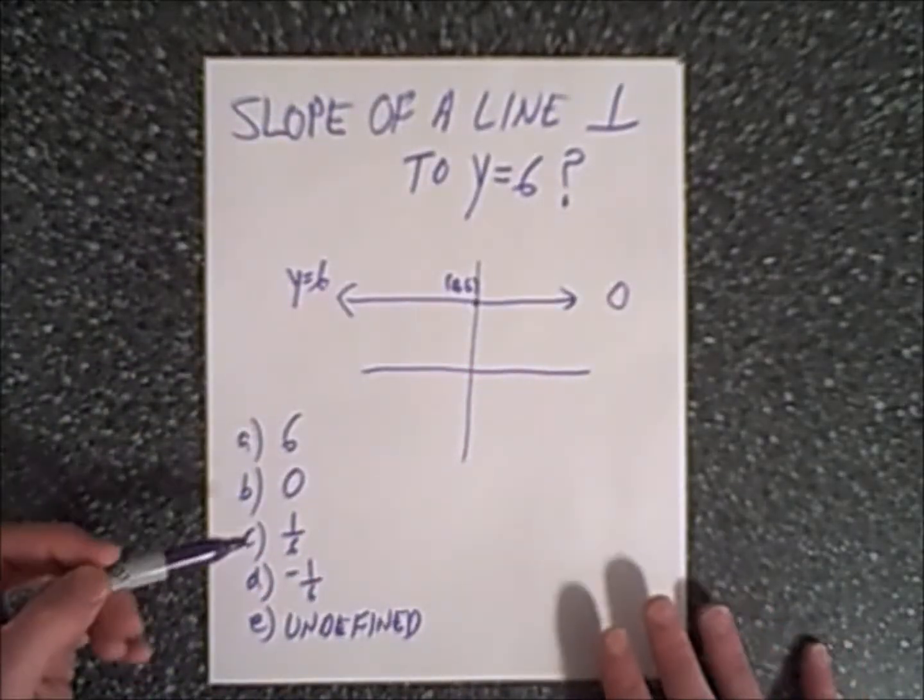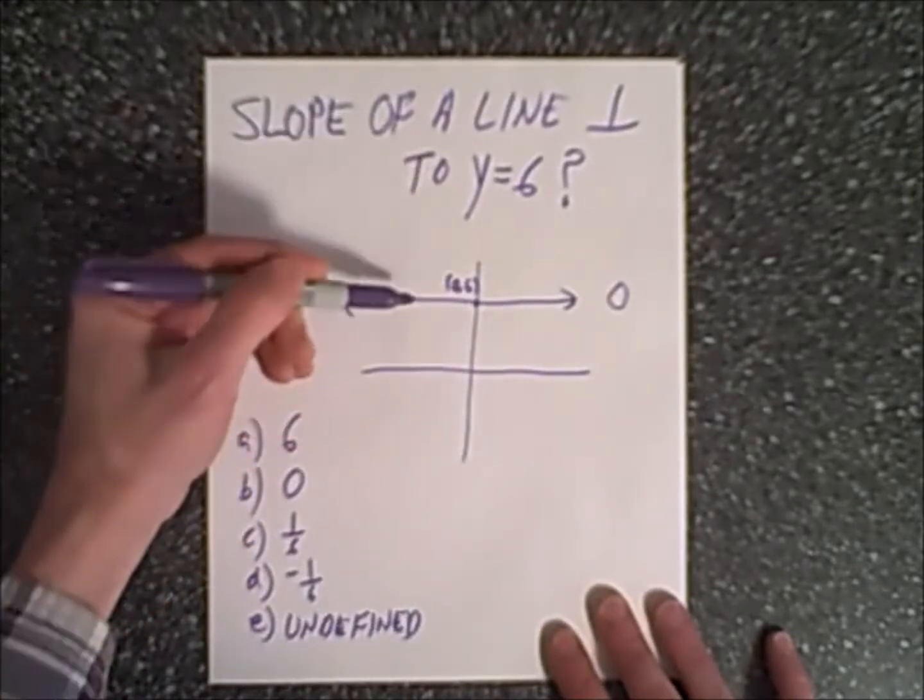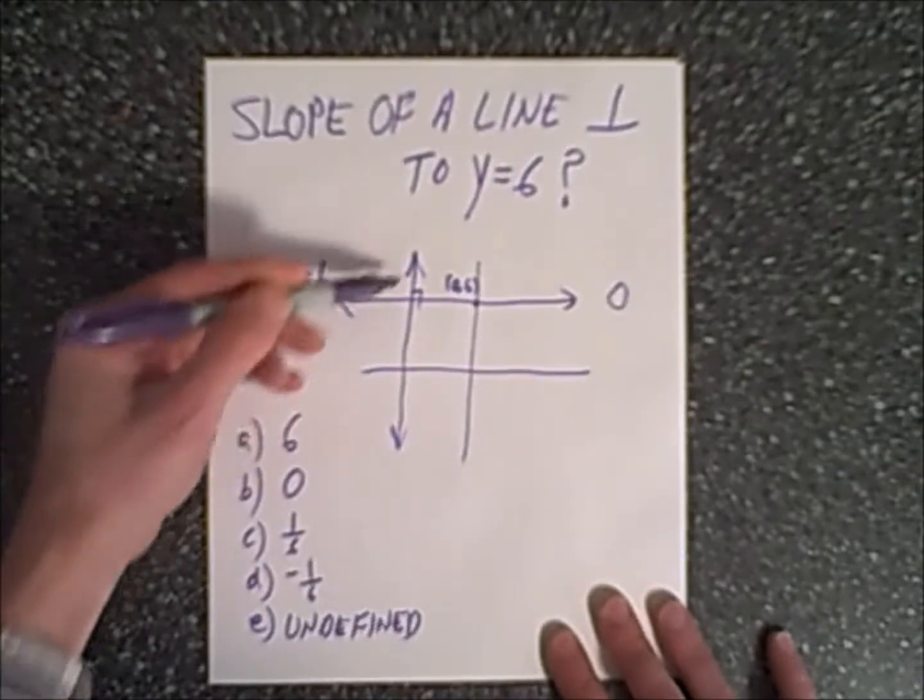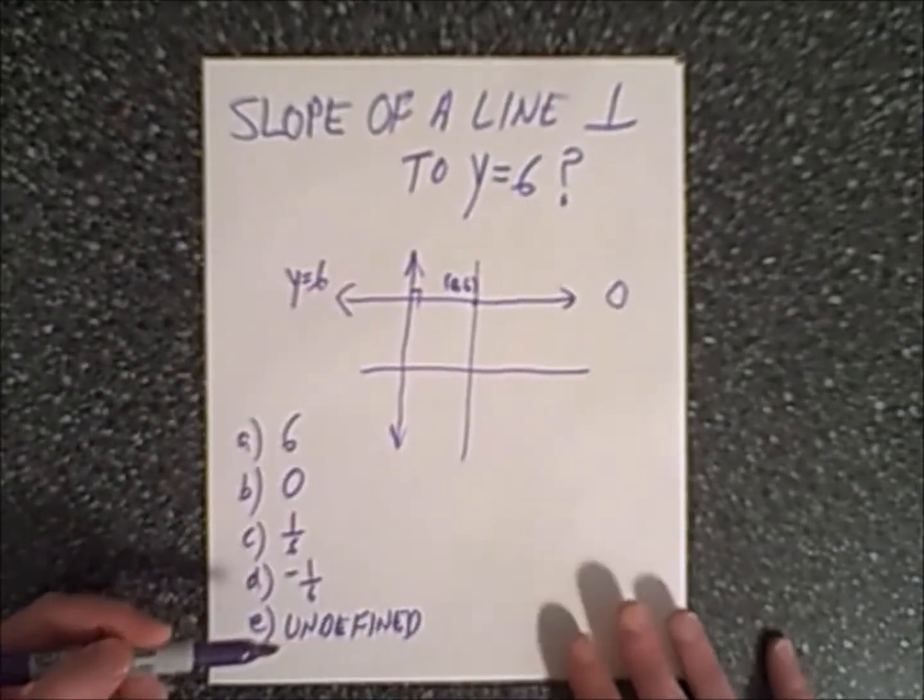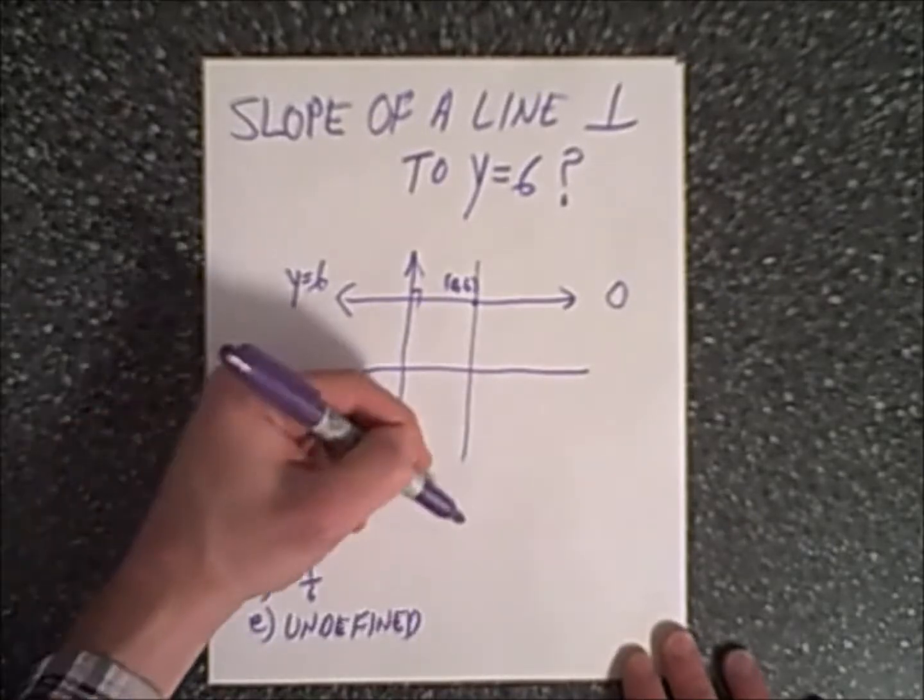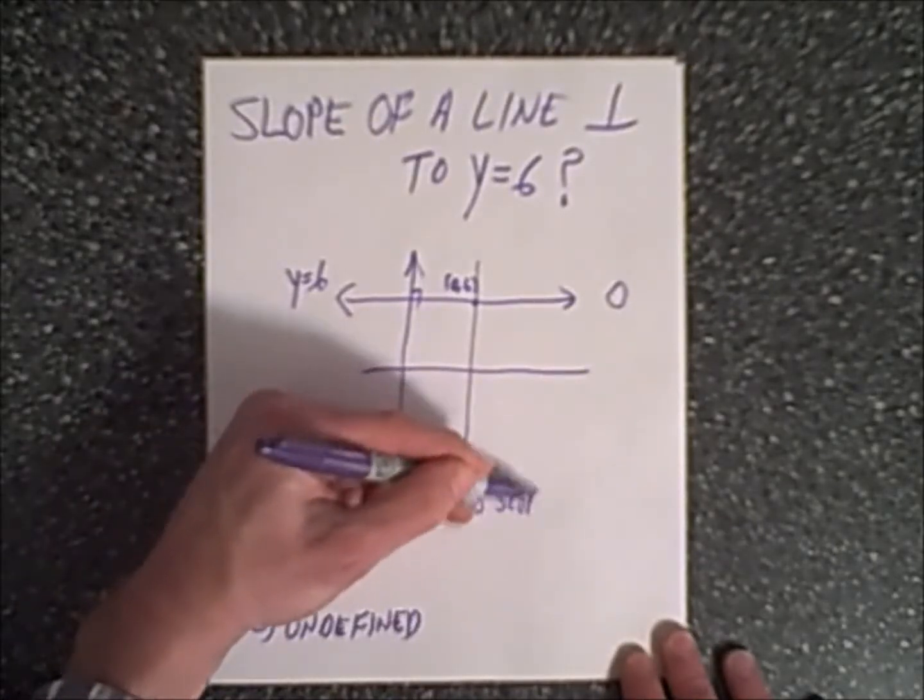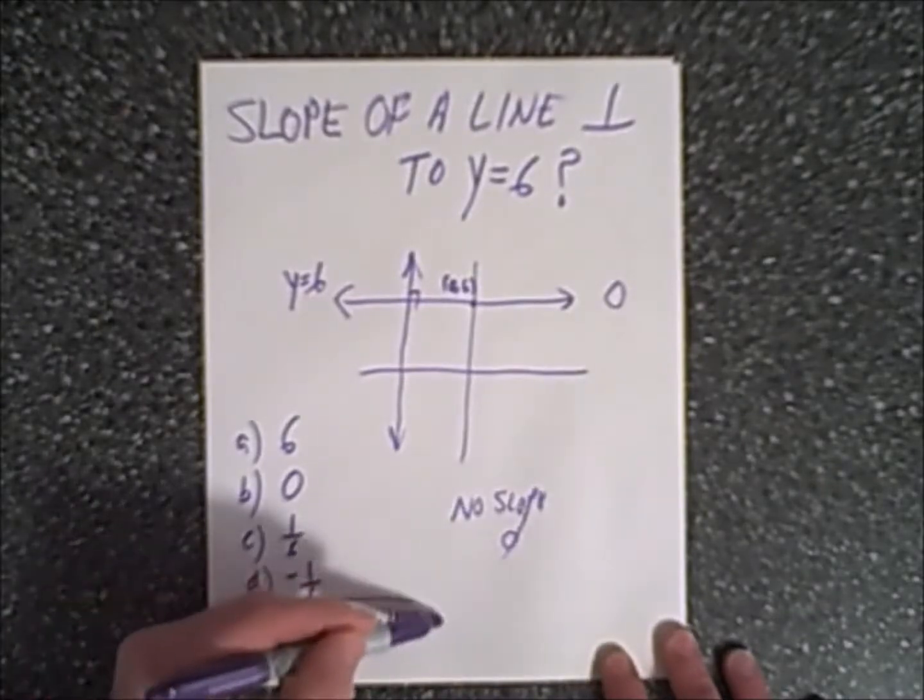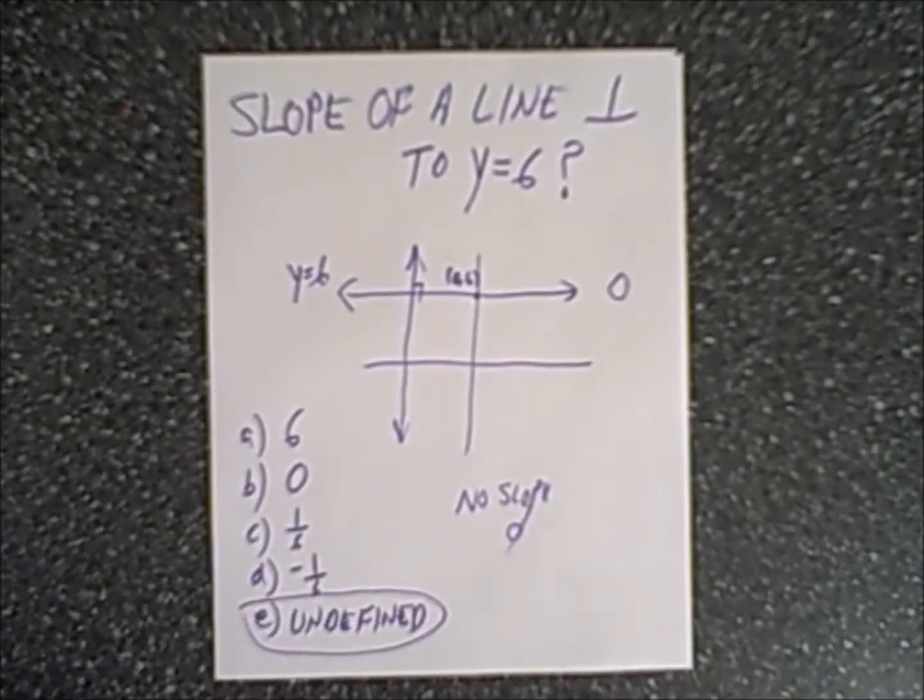We need to figure out what is the slope of a line that is perpendicular, that's going to be vertical. You might recall that when you have a vertical line, the slope is either no slope or undefined. Therefore our answer is E, undefined.